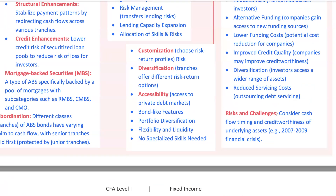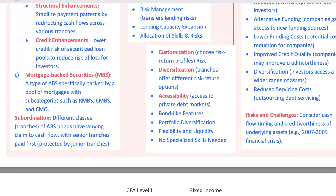Despite all these benefits, securitization does come with some risks. First, there's credit risk tied to the underlying assets. If borrowers in the loan pool default, the cash flow to ABS investors is reduced, impacting returns. Another risk is related to cash flow timing — payments can fluctuate due to early loan payoffs or borrower defaults, making cash flows irregular. One critical lesson from the 2007 to 2009 financial crisis is that securitizing risky assets, like subprime mortgages, without proper oversight can destabilize the entire financial system. While securitization is a powerful financial tool, it must be managed responsibly to avoid triggering broader economic issues.